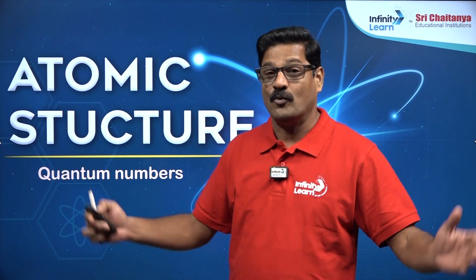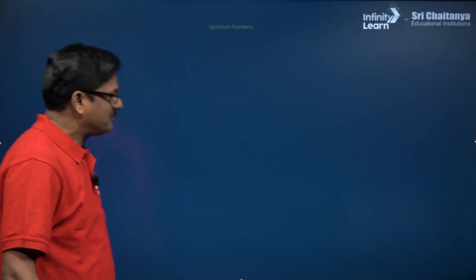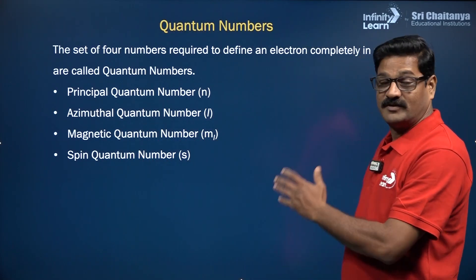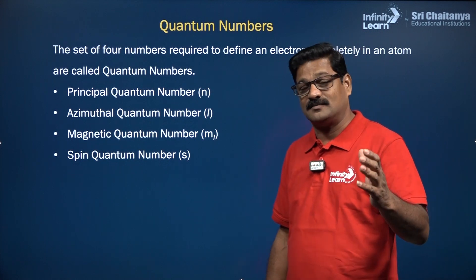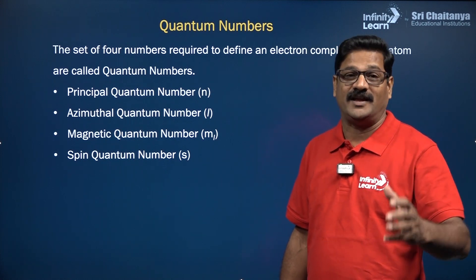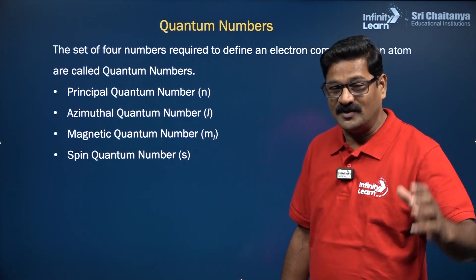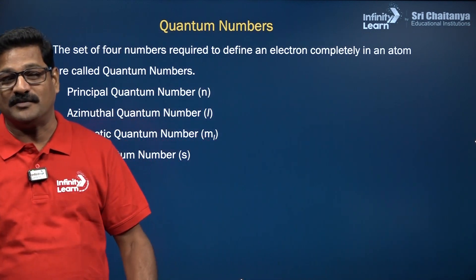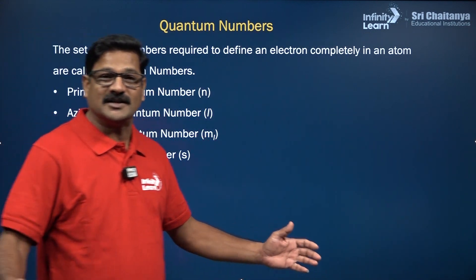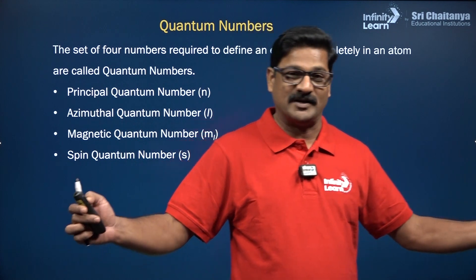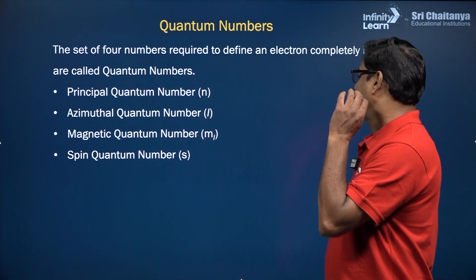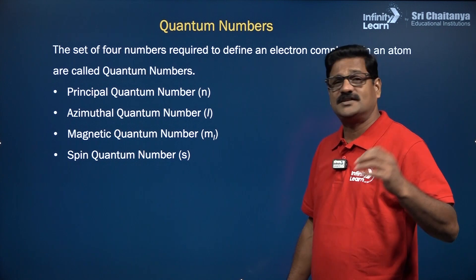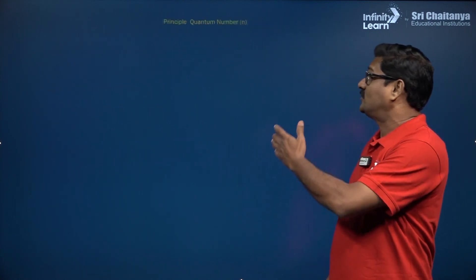What are quantum numbers? A set of four quantum numbers are given to an electron in an atom to give its identity. They are: principal quantum number, azimuthal quantum number, magnetic quantum number, and spin quantum number. Let us see a short recap about each quantum number.